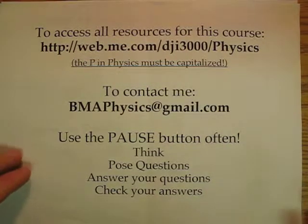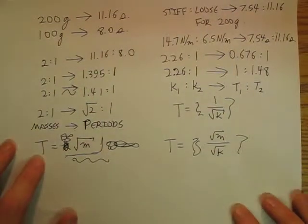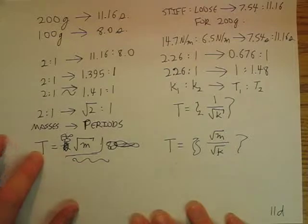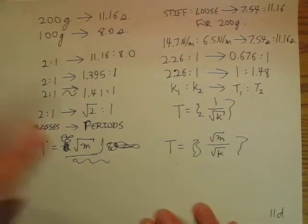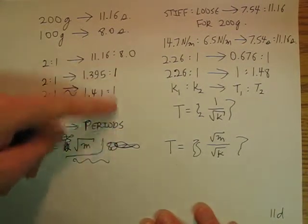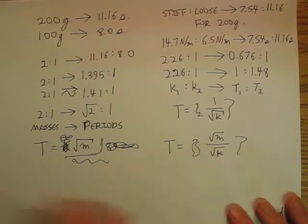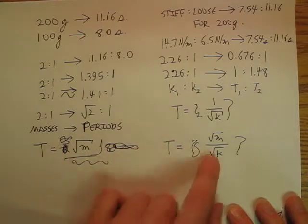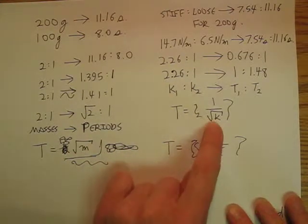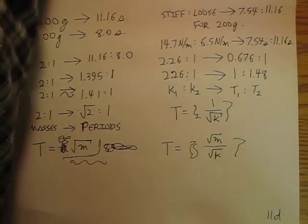We are still in the process of building an equation for how long it takes for a mass to bob up and down on a spring. Going back to the original 11a video, we had a mass bouncing up and down on a spring, and it took a certain amount of time. We found out that the time is proportional to the square root of the mass, and it is inversely proportional to the square root of the spring constant.